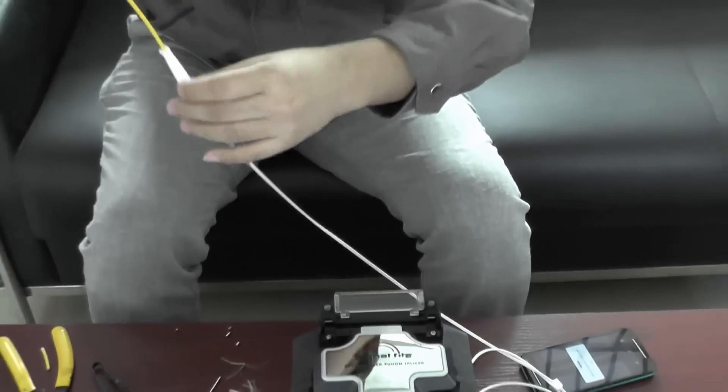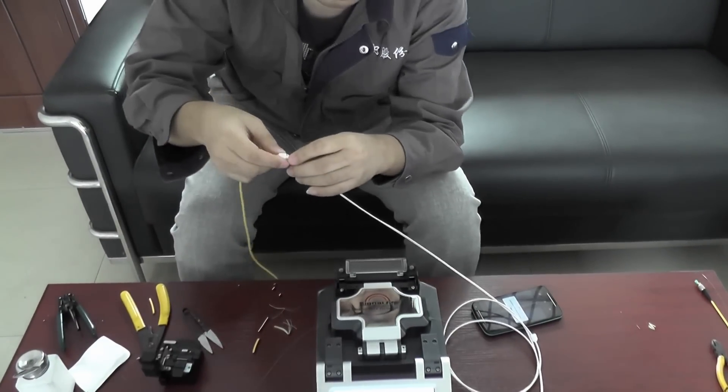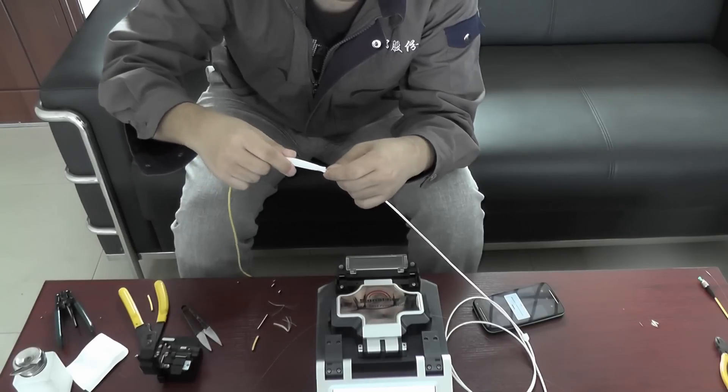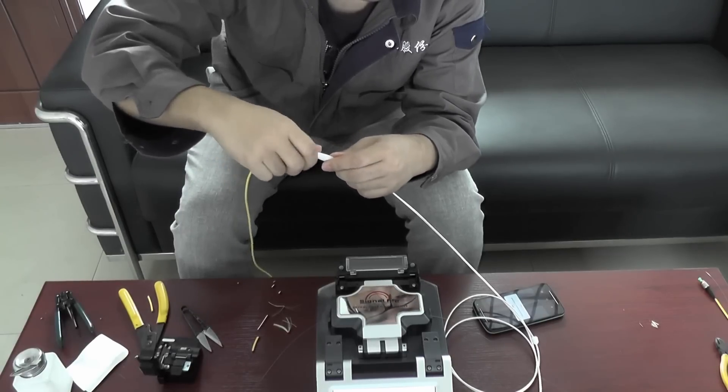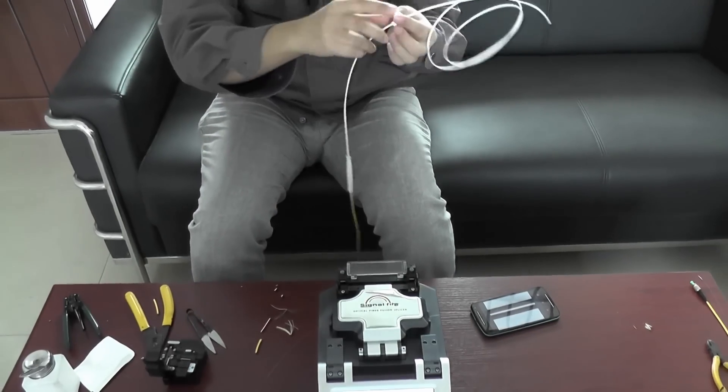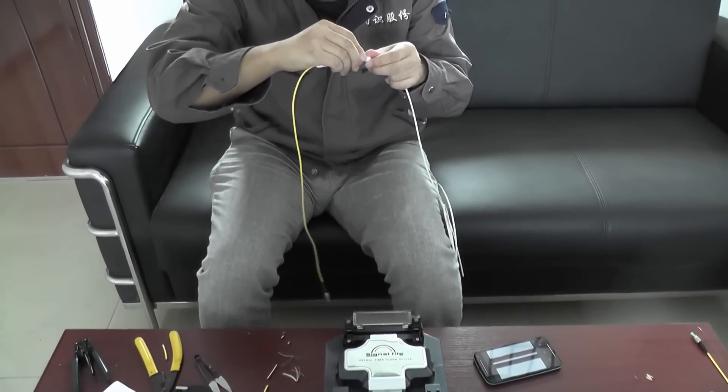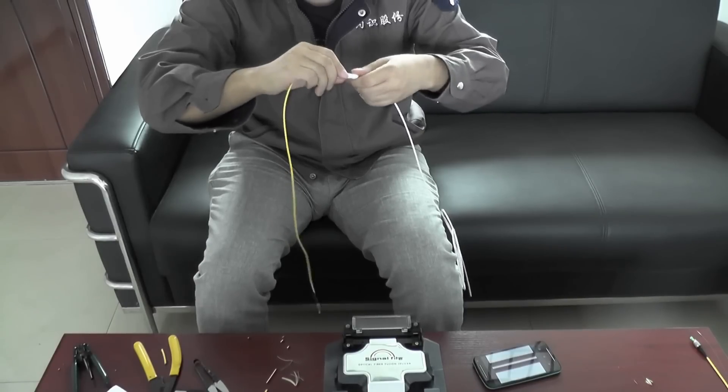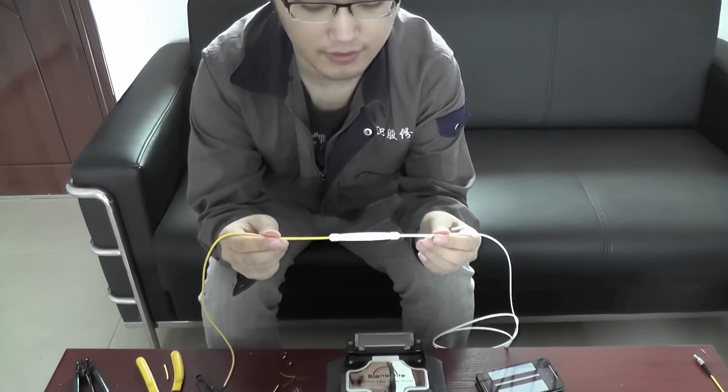And we will see the light is off, means the heat is ready. You see, it's ready. Then we will use the protective tube. Okay, splicing finished.